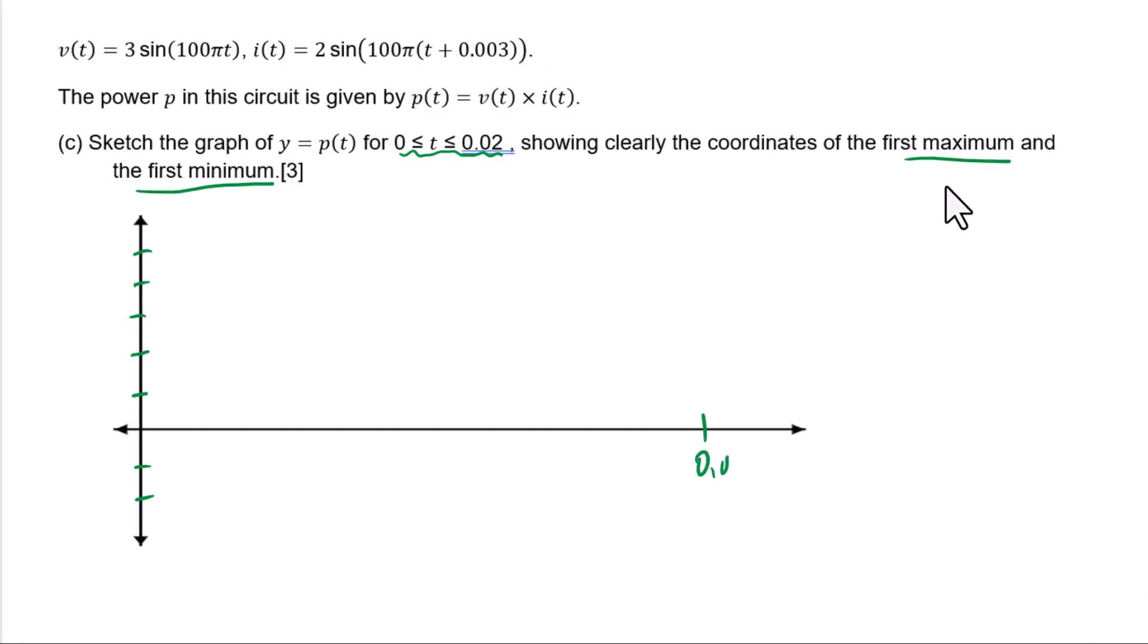0.02, then half, half, half: 0.005, 0.01, 0.015. Let's plot the points. 0.0035, 4.76. Showing clearly the coordinate, which means that you need to label 0.0035, 4.76 as a 3 significant figure fix.